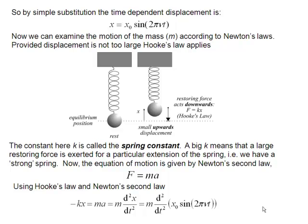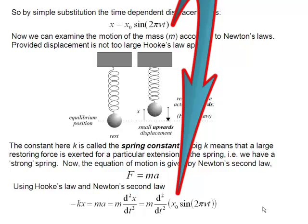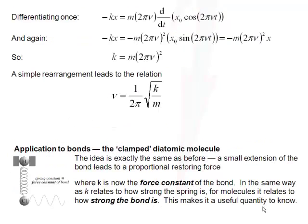But we can also relate force to Newton's second law of motion. Force is equal to the mass times the acceleration. So our force is minus kx. That's the Hooke's law force. But the acceleration is the second differential of the displacement with respect to time. Also comes from Newton's second law of motion. But we've got an expression for the displacement up here. So to make progress, what we now have to do is differentiate this function twice.